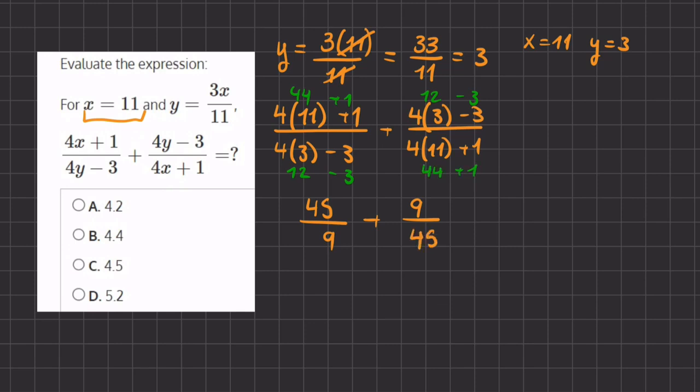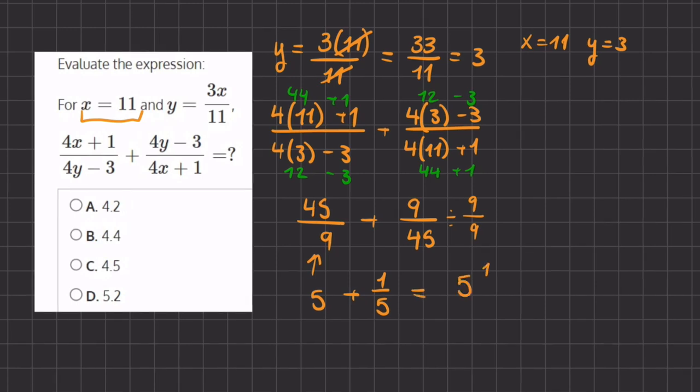Now if we simplify these two fractions, 45 divided by 9 simplifies to 5, plus 9 divided by 45, we can divide the top and bottom by 9. And when we simplify it, we get 1 divided by 5. So when we add these, we get 5 and 1 fifth. And when we turn this into a decimal, it becomes 0.2.